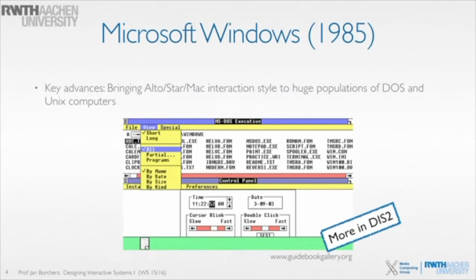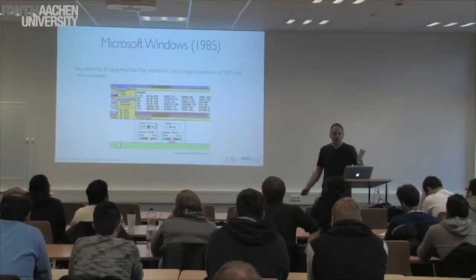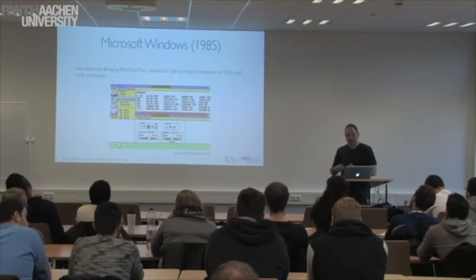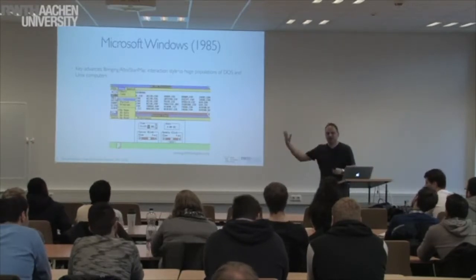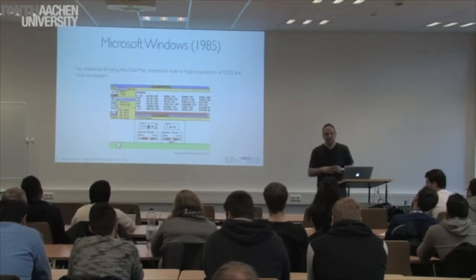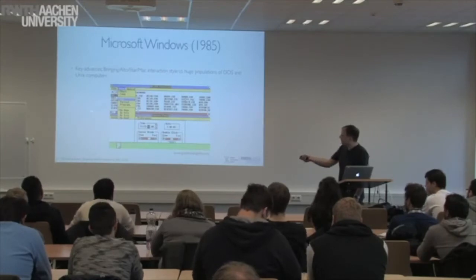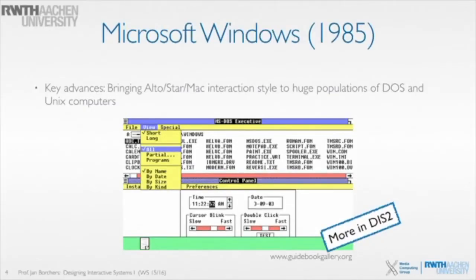So what were the key things that happened in Windows? Windows came out in 1985, quickly following the Mac. What's interesting is if you look at this design and compare it to what the Alto, Star, or Mac user interface looked like, it almost seems like it's a step back — it looks more like somebody took a text editor and tried to build something that looks like a GUI. So it's less flexible in a way, curiously aligned to certain columns and rows.